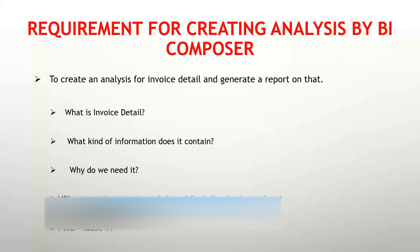Before we proceed, we should know what invoice detail is and what kind of information it can contain. Invoice detail is essentially a bill which contains basic information about a purchase — the date on which the product was purchased, a description, the invoice amount, quantity of the product, supplier information, and site information. These are the basic pieces of information which an invoice detail can contain.